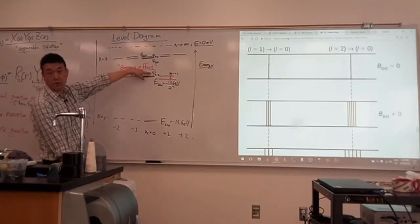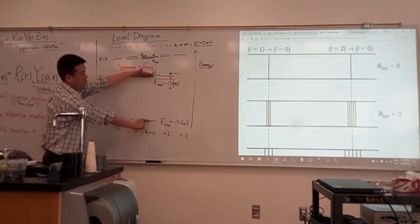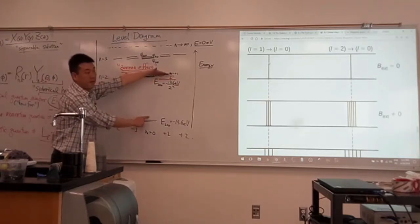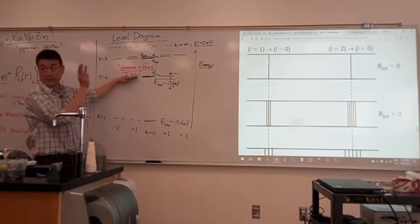With the psi 2, 1, 0, you have this state. From here to here, one. From here to here, another. Or from here to here, three.